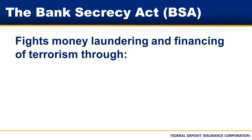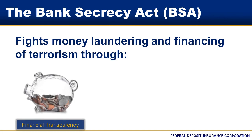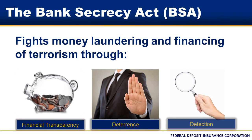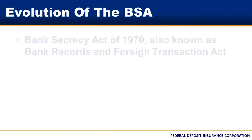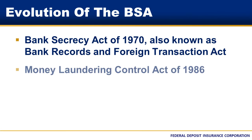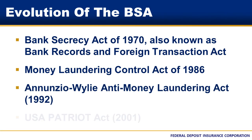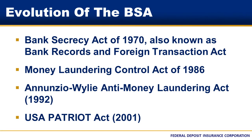The Bank Secrecy Act is the common name for a series of laws and regulations to combat money laundering and terrorist financing. The BSA provides a foundation to promote financial transparency and to deter and detect those who attempt to misuse the U.S. financial system to launder funds or finance terrorist acts. The BSA has evolved over the last 50 years, with several laws impacting regulatory requirements. One of the most recent pieces of legislation is the USA Patriot Act. These laws have resulted in regulations that require banks to establish and maintain BSA compliance programs.